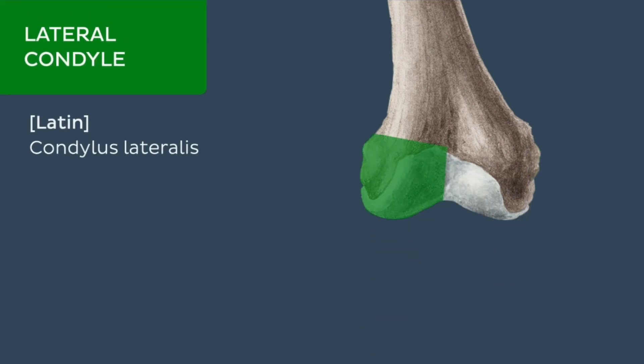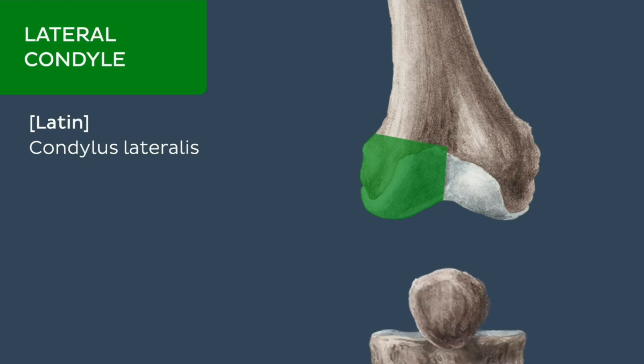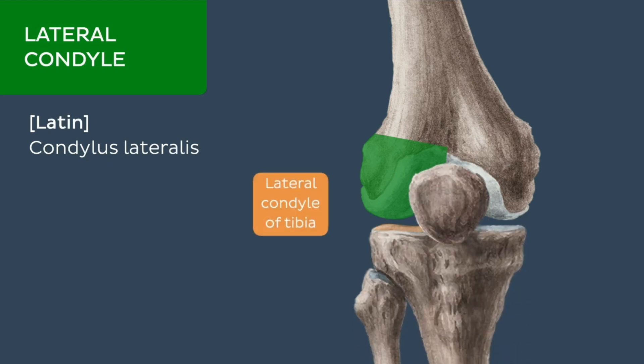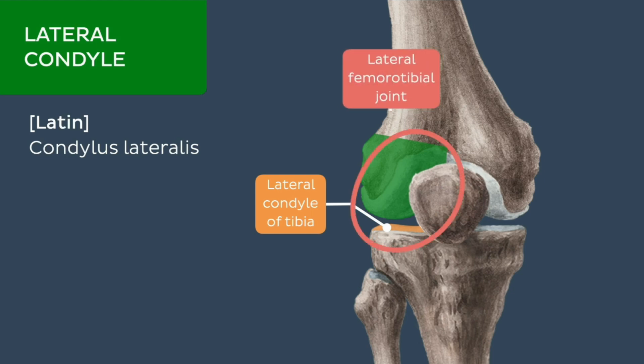The lateral condyle is the longer round eminence of the distal femur. It articulates with the lateral condyle of the tibia via the lateral meniscus to form the lateral femorotibial joint.